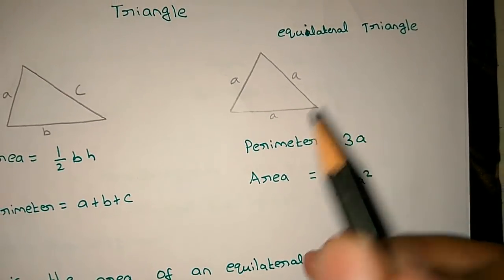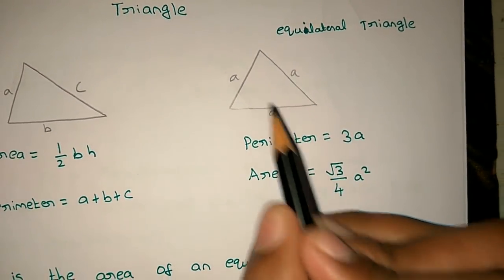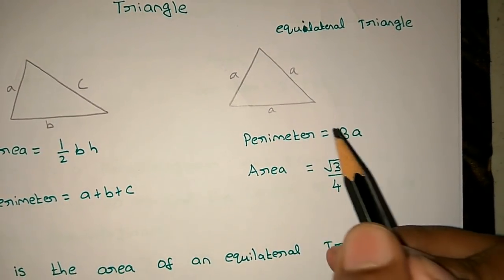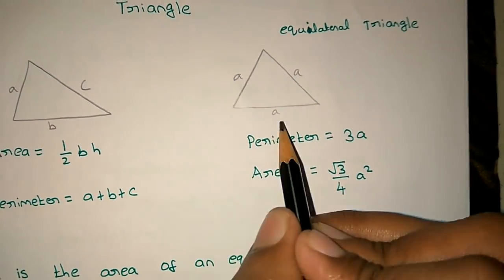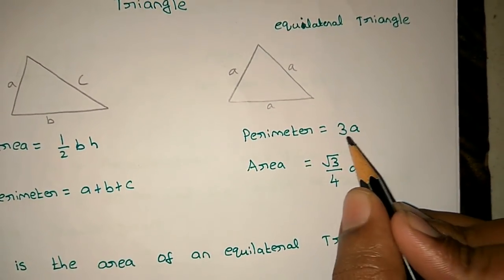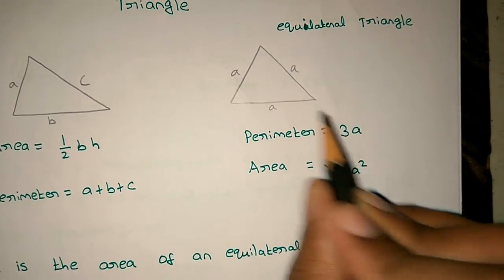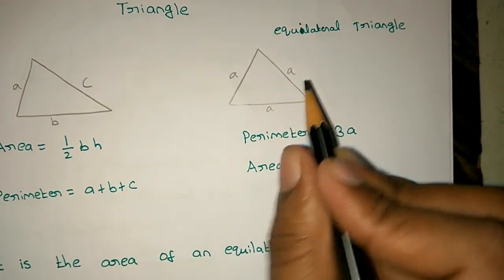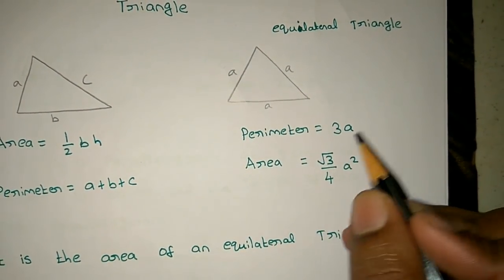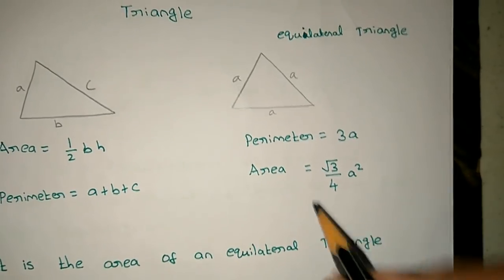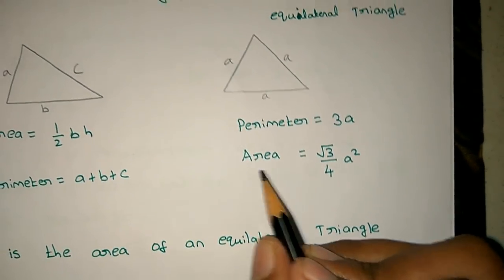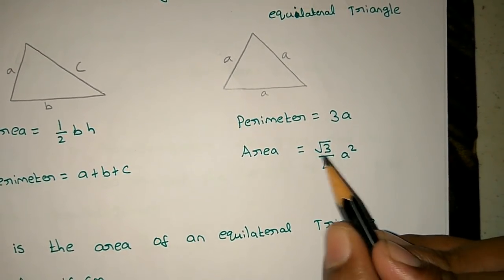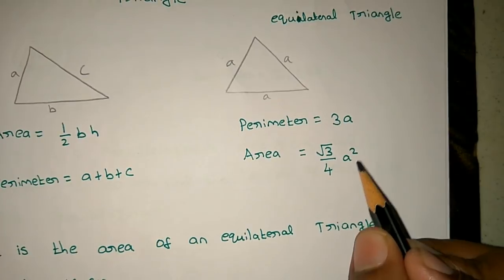For the Equilateral Triangle, the perimeter is 3A, since we add A plus A plus A. The area formula is root 3 by 4, that is √3/4 × A².